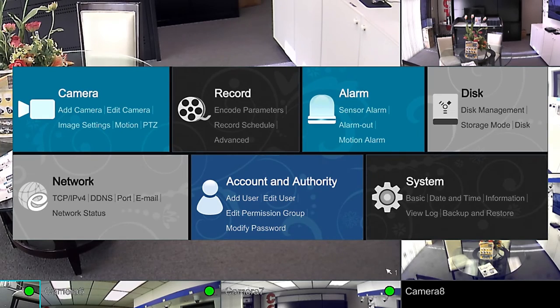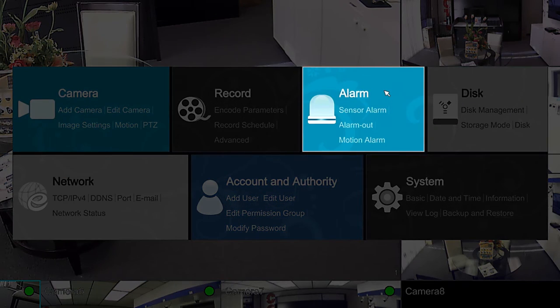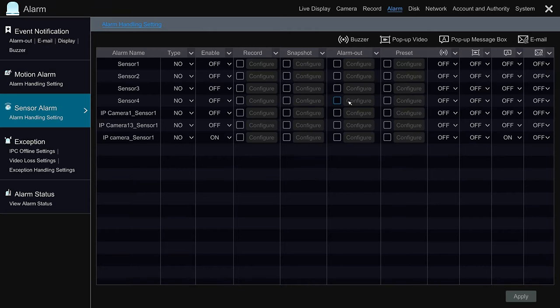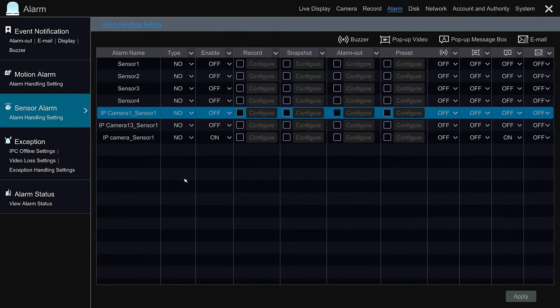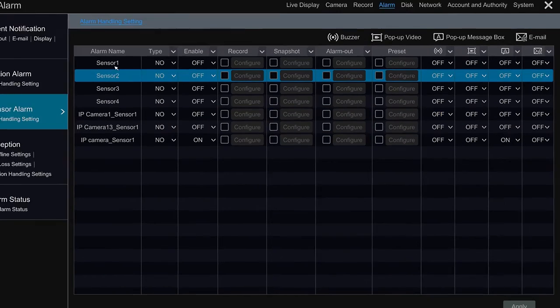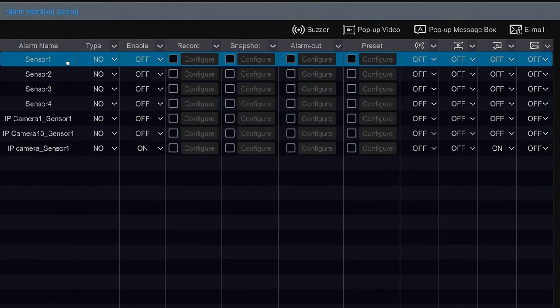Once the menu comes up we will select the alarm menu. Then click on sensor alarm. Under the sensor alarm we connected our sensor into the number one. The type is normally open. We are going ahead and enable it.